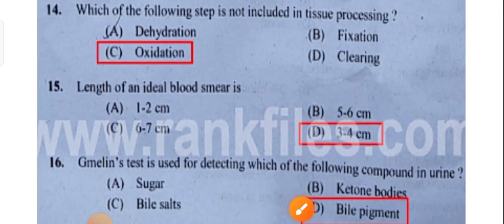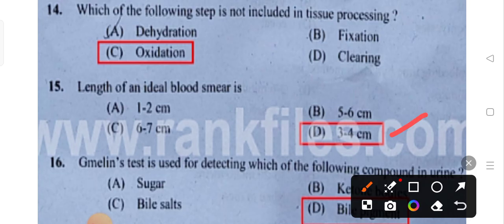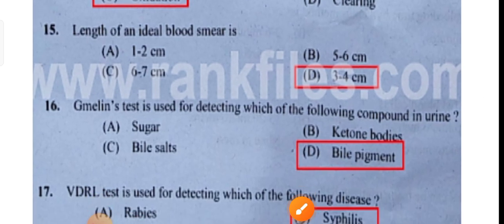The length of an ideal blood smear is 3 to 4 centimeters. Option D is the correct answer.